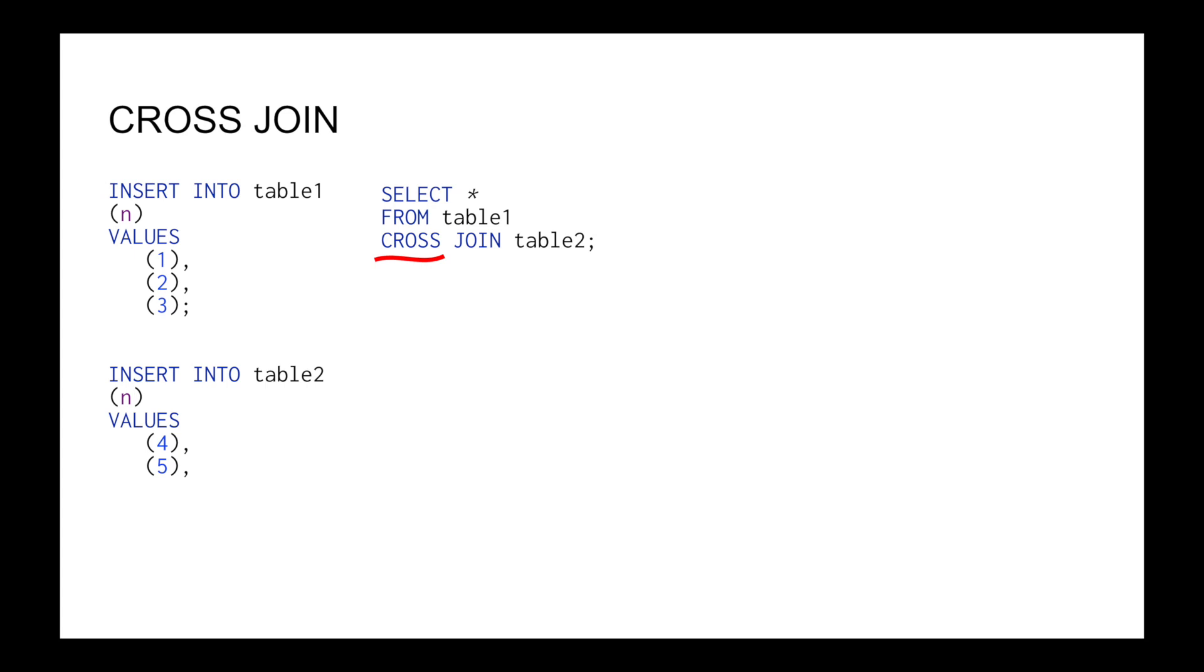For example, there are two tables, one of them has three rows, the other has two. Then the cross join will produce six rows. Once again, just all combinations.